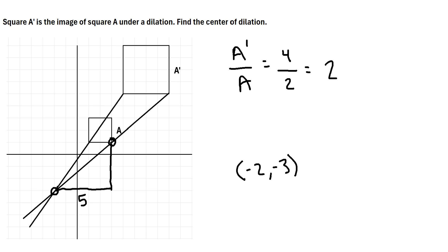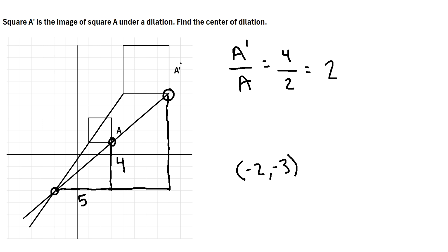Going ten to the right and eight up from the center, we do land exactly at the bottom right corner of A'. So that verifies that negative two, negative three must be the center of dilation.